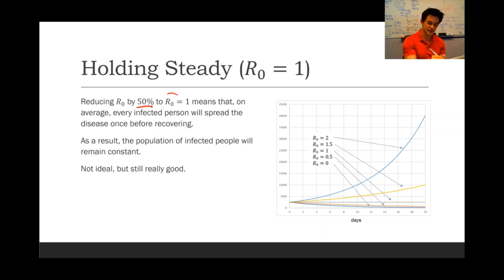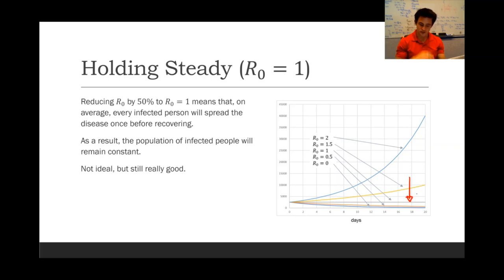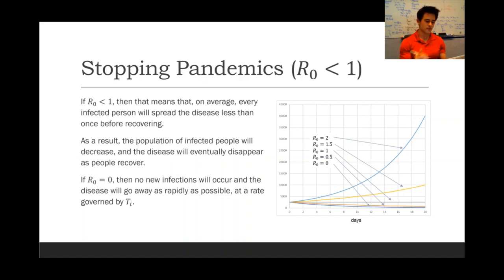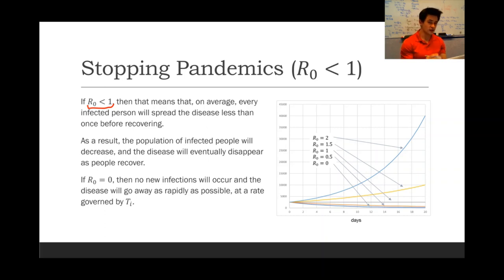Reducing R0 by 50% down to R0 equals 1 means that, on average, every infected person will spread the disease once before recovering. That looks like a flat line — if you can achieve R0 equals 1, then the population of infected people will remain constant. It's not ideal to have this disease continuing to be present, but it's still really good. And if you really want to stop a pandemic, you want R0 to be less than 1, meaning that on average every infected person will spread the disease less than once before recovering, and the population of infected people will decrease.